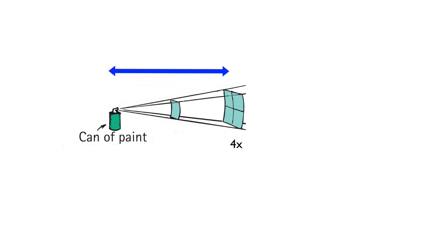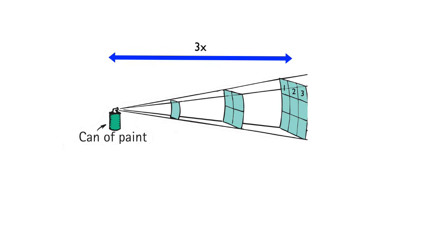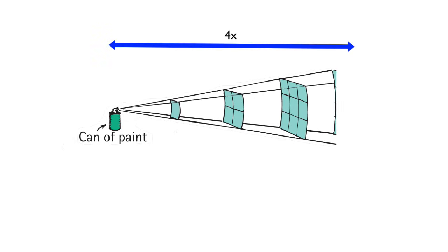Double the distance, and you have four times the area to coat. Tripling the distance gives you nine times the area. Quadruple the distance, and it's 16 times. Way out here, it'll take a long time for a unit square to get fully coated.